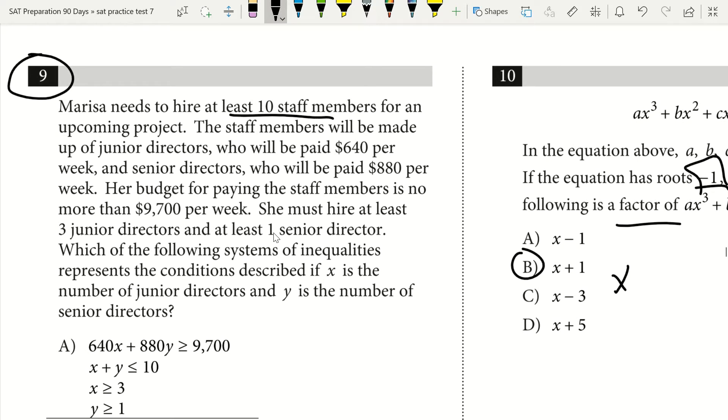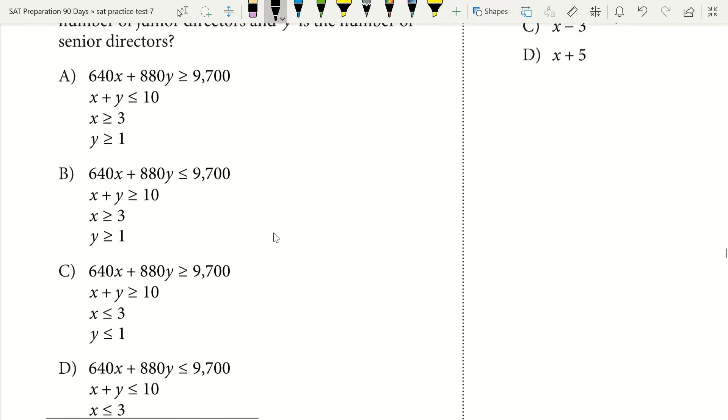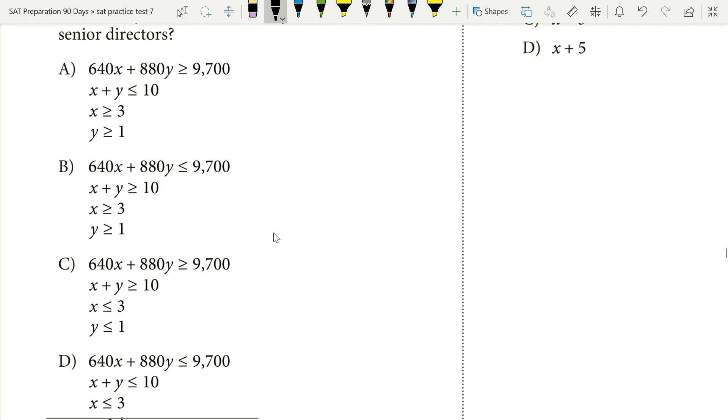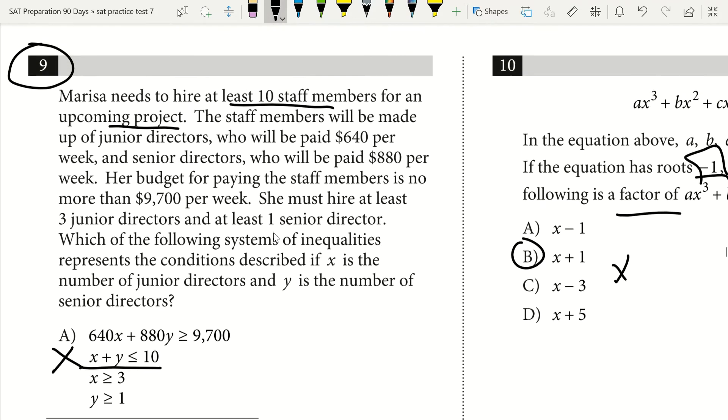Marissa needs to hire at least 10 staff members for an upcoming project. The thing that jumps out immediately is it says at least 10. I look at my options with 10 and I see A has less than 10, so A is wrong. B has greater than 10, C has greater than 10, D has less than 10. So D is incorrect. Now I'm looking at B and C as my potential correct answers.